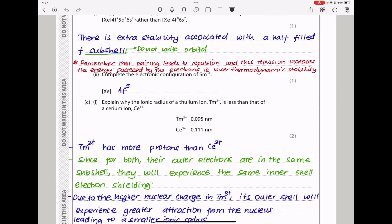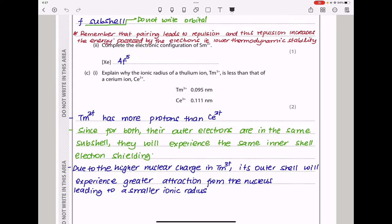Part C says explain why the ionic radii of the thulium ion Tm3+ is less than that of cerium ion Ce3+. When I look at the periodic table this one here will have more protons than that and so I say Tm3+ has more protons than that and since for both their outer electrons are in the same subshell they will experience the same inner shell shielding or inner shell electron shielding. However, due to the high nuclear charge in Tm3+, remember this has more protons than that so because it has more protons the nuclear charge is going to be greater so its outer shell will experience greater attraction from the nucleus leading to a smaller ionic radius.